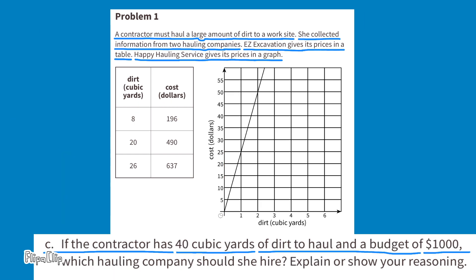If the contractor has 40 cubic yards of dirt to haul and a budget of $1,000, which hauling company should she hire? Explain or show your reasoning. I notice in Easy E's table, 20 cubic yards of dirt costs $490 to haul. I can easily multiply that 20 times 2 to make 40. Since I multiplied the 20 cubic yards of dirt times 2, I have to multiply $490 times 2, which is $980. So through Easy E, you can haul 40 cubic yards of dirt for $980.